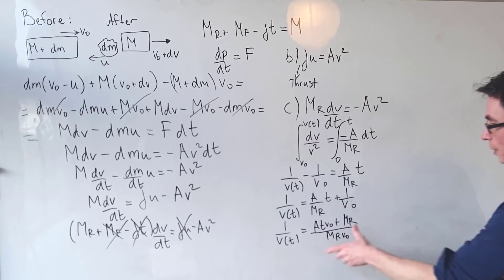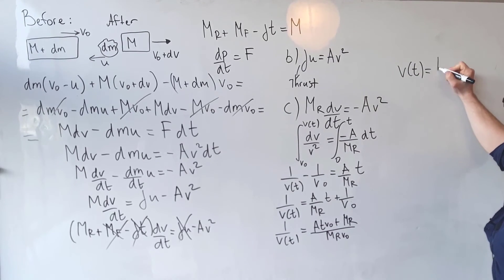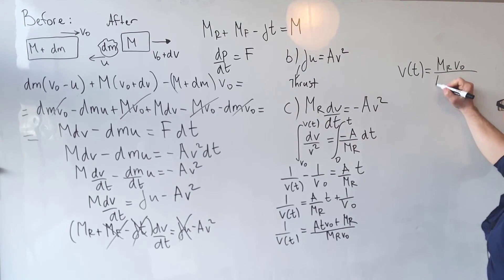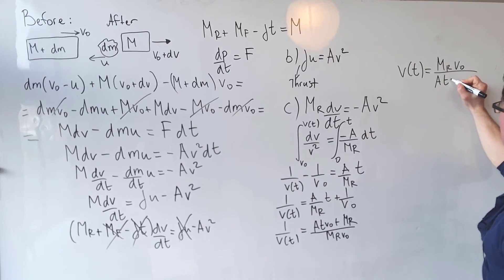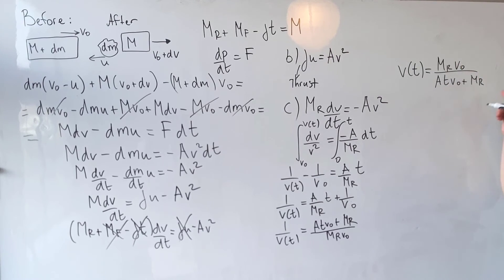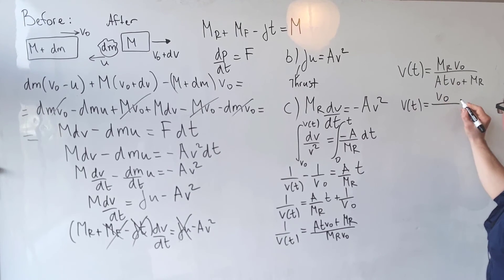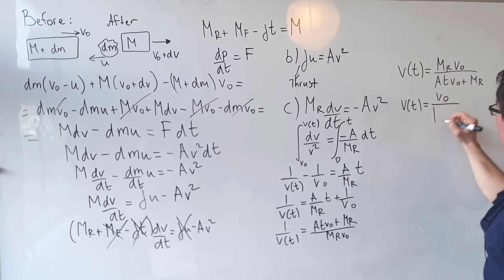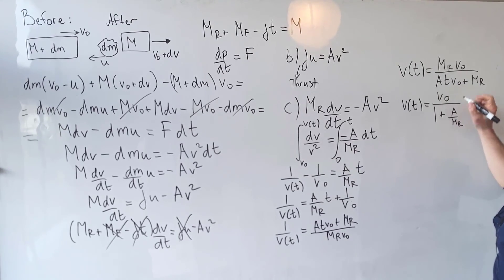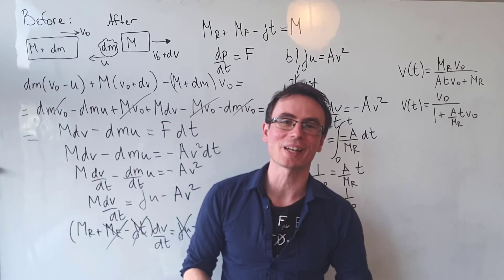Flipping the fraction gives v(t) = m_R·v₀ / (a·t·v₀ + m_R). To make it neater, dividing numerator and denominator by m_R, we get v(t) = v₀ / (1 + (a/m_R)·t·v₀). This is the equation for the speed of the rocket after it runs out of fuel.